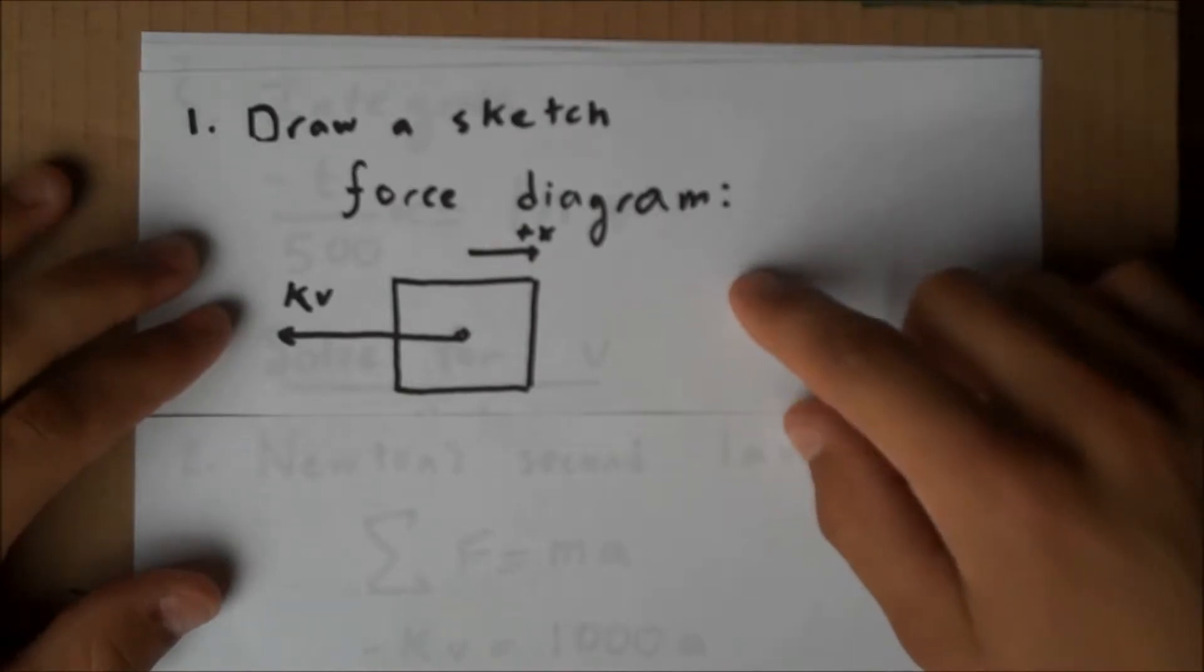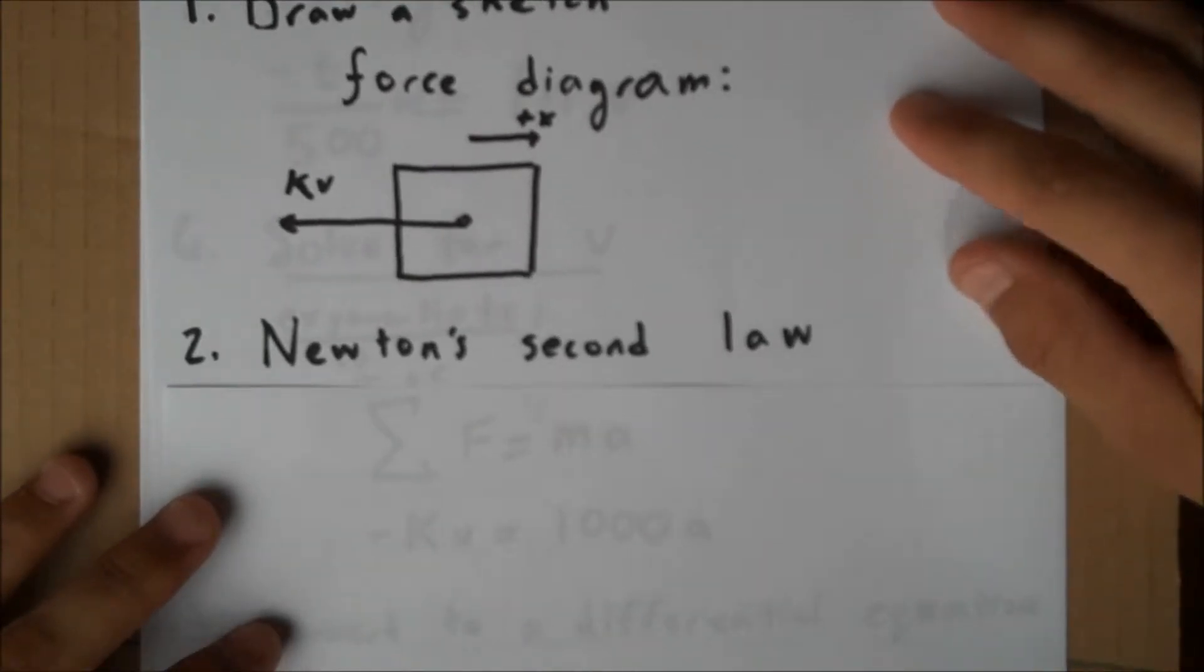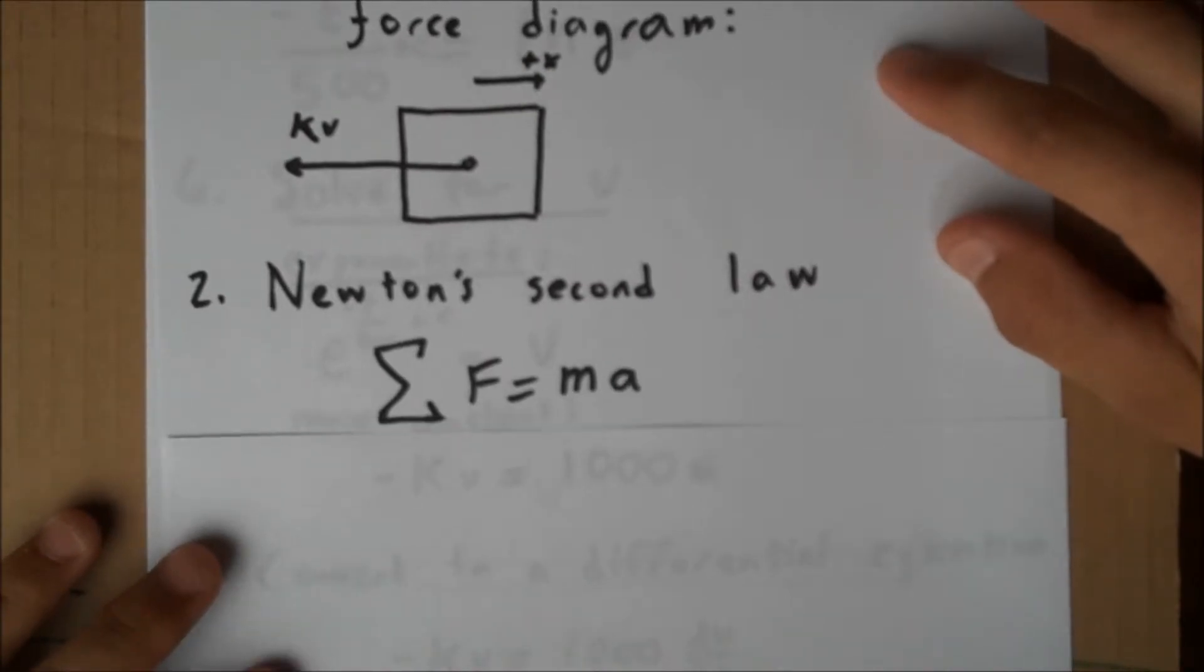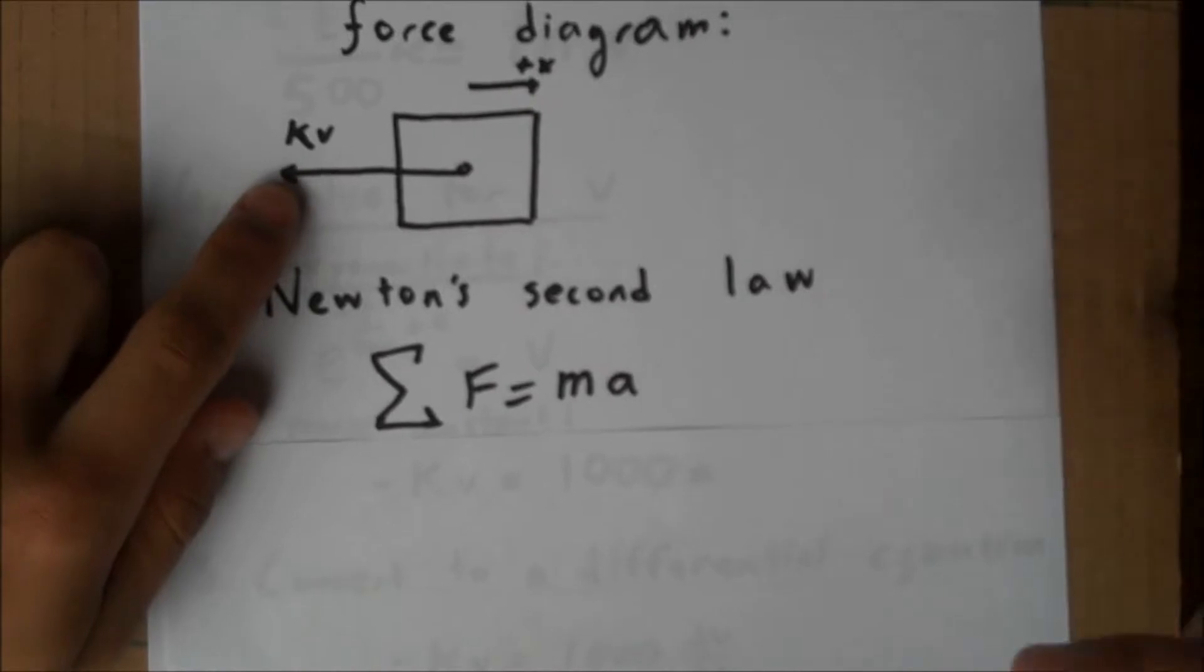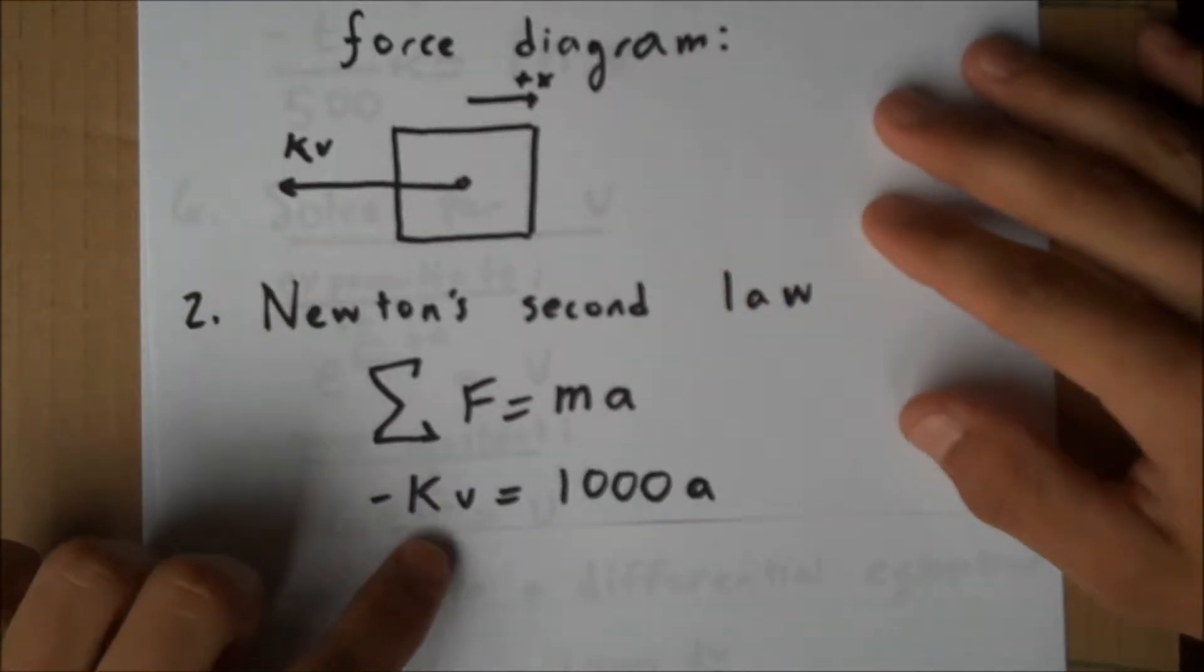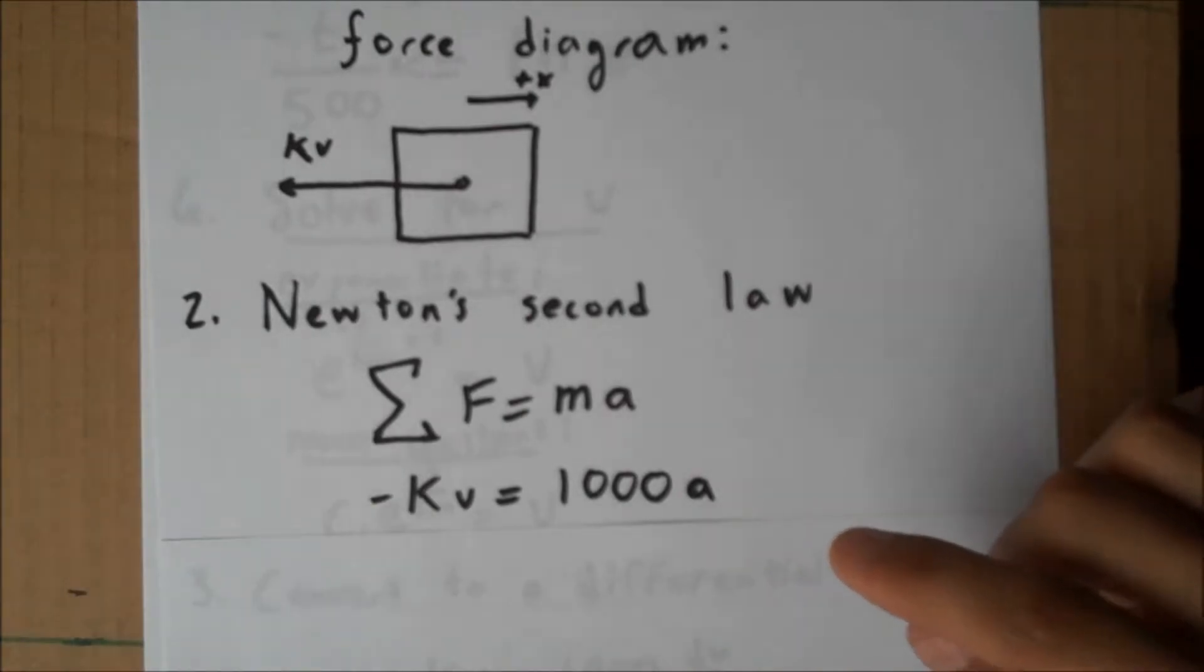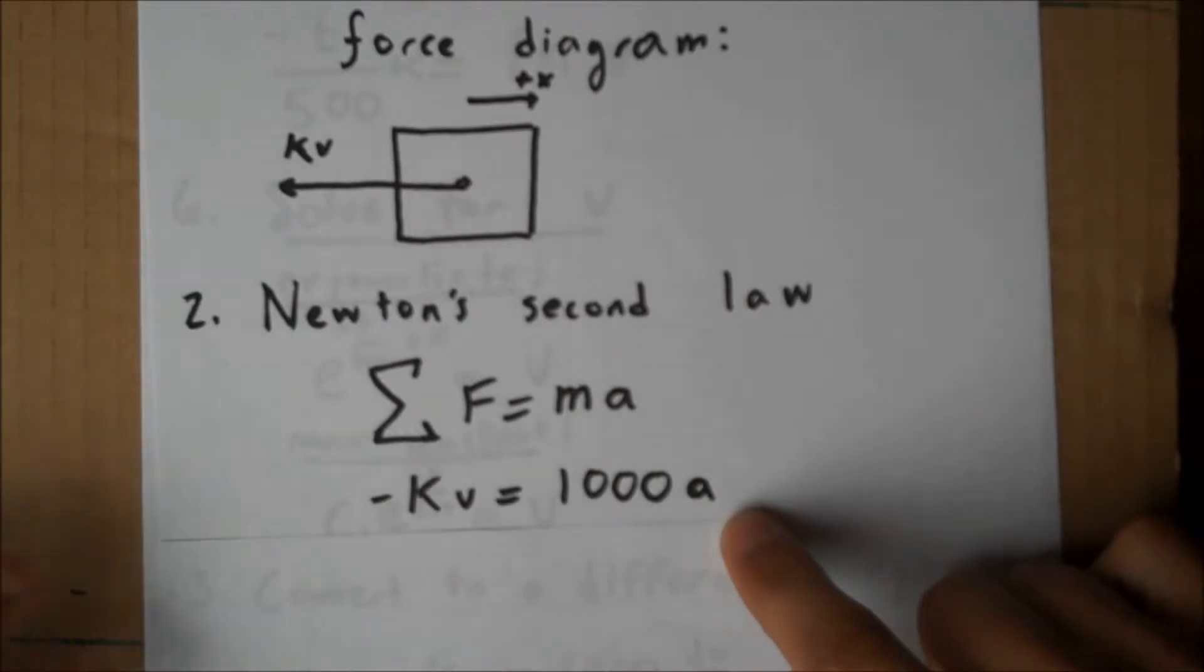Using this force diagram, we can now write Newton's second law. The sum of the forces equals mass times acceleration. The only force acting backwards because of the coordinate system imposed is negative kv. The mass, as the problem stated, is 1,000, and we'll leave the acceleration a for now.